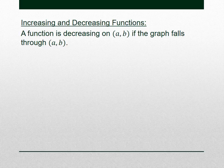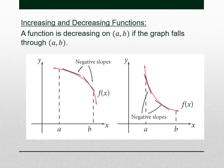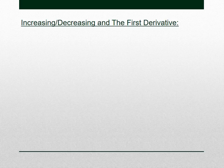A function is decreasing if, instead of rising through this interval, it falls through the interval. So we start at A, go to B, and fall all the way through that interval. Notice that it has negative slopes at all of these points for those tangent lines. Same thing in this other example from A to B — it falls through that interval and the tangent lines have negative slopes.